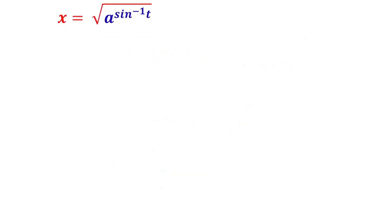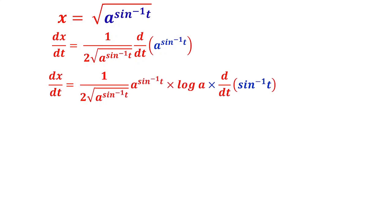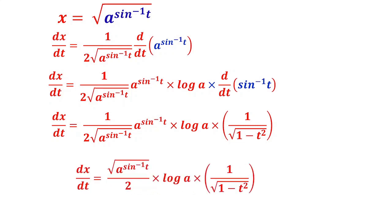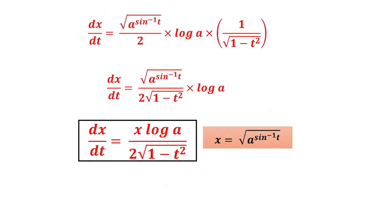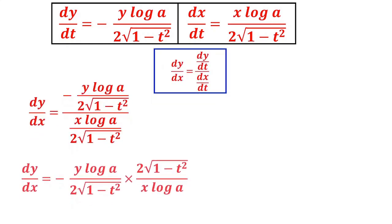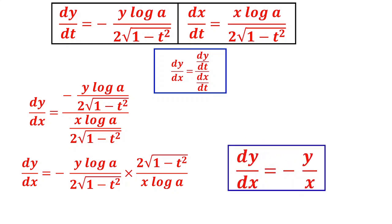With dy/dt and dx/dt ready, dy/dx = (dy/dt)/(dx/dt). Dividing: the factors 2√(1−t²) cancel and log a cancels, giving dy/dx = −y/x. You should be very careful to use the chain rule during differentiation.